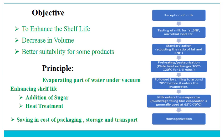Another basic benefit is saving in cost of packaging, storage, and transport, since the volume is reduced by two or three times. The basic steps in the flow chart are: reception, testing, standardization, preheating and pasteurization, then partial chilling, then actual evaporation, and finally homogenization and cooling.